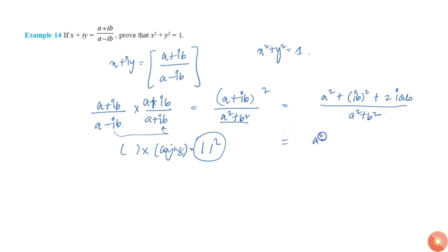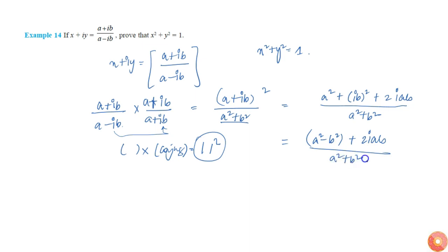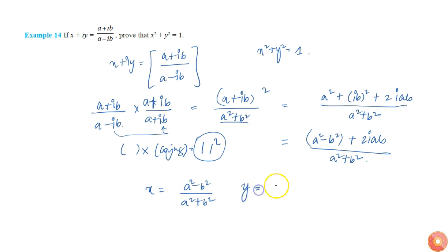Since i squared equals −1, this becomes a squared minus b squared plus 2iab, all over a squared plus b squared. Comparing real and imaginary parts, we get x equal to a squared minus b squared by a squared plus b squared, and y equal to 2ab by a squared plus b squared.